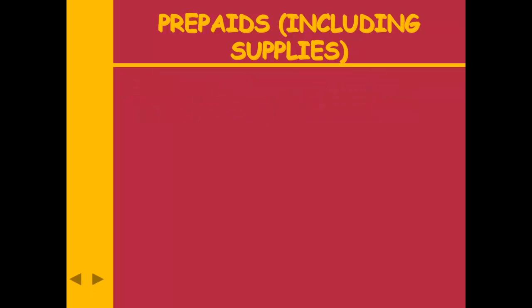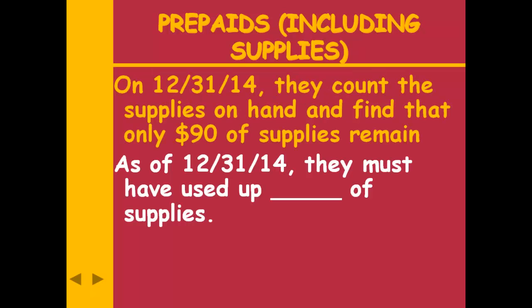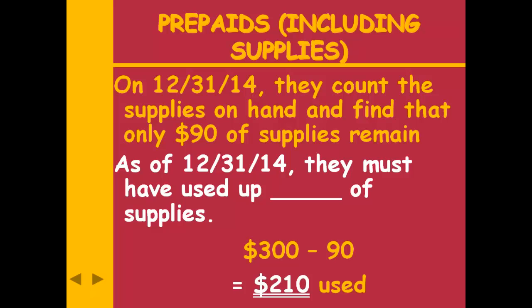December 31st rolls around. We go out and count, and we have $90 of supplies left. I had $300, but there's only $90 left — so I must have used up $210. If I had $300 and only $90 remains, I used up $210 of supplies. That is what I'm going to make my adjusting entry for: the amount used up — $210.